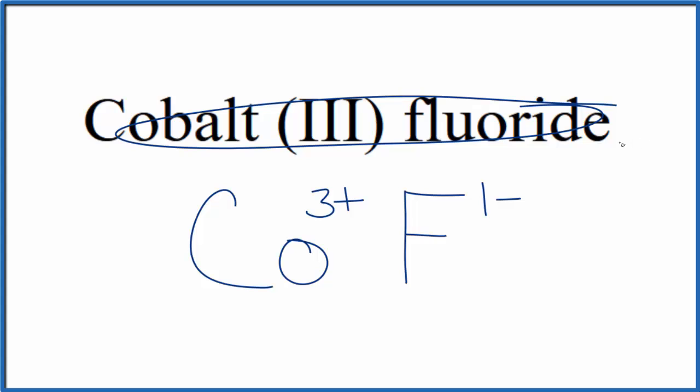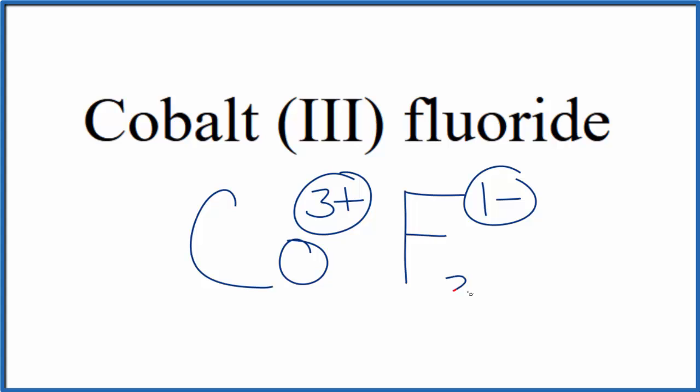Because cobalt (III) fluoride is neutral, it doesn't say ion after it, these have to add up to zero, give us a net charge of zero. If we had 3 fluoride ions, 3 times 1-, that would be 3-, that would balance out the 3+.